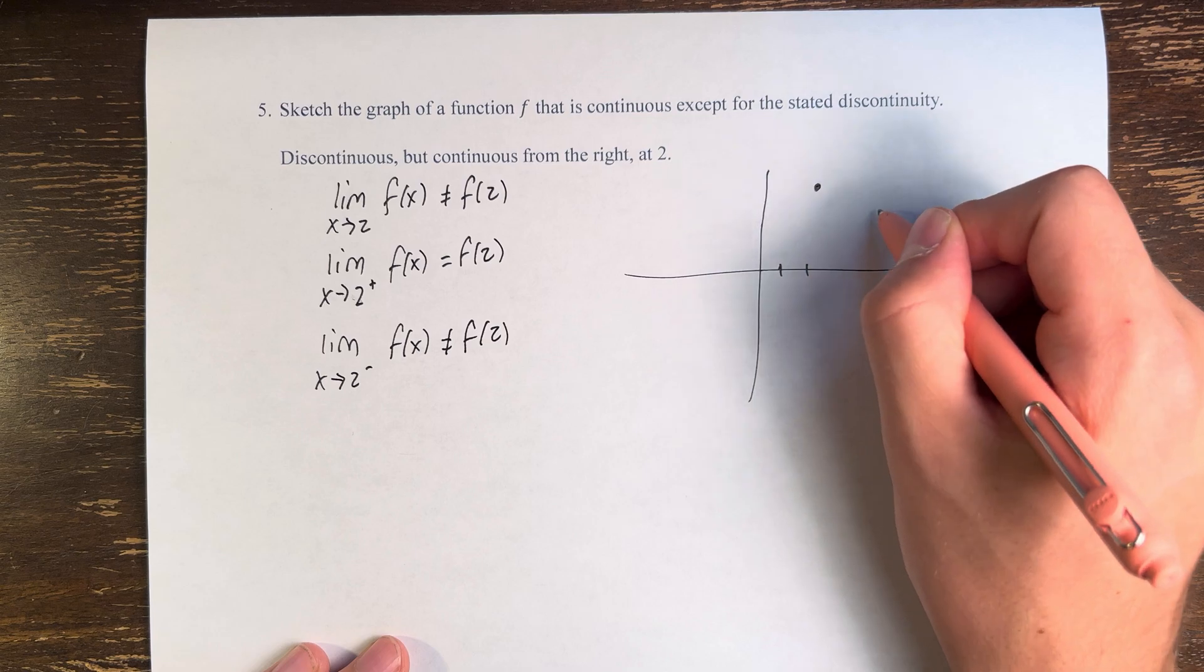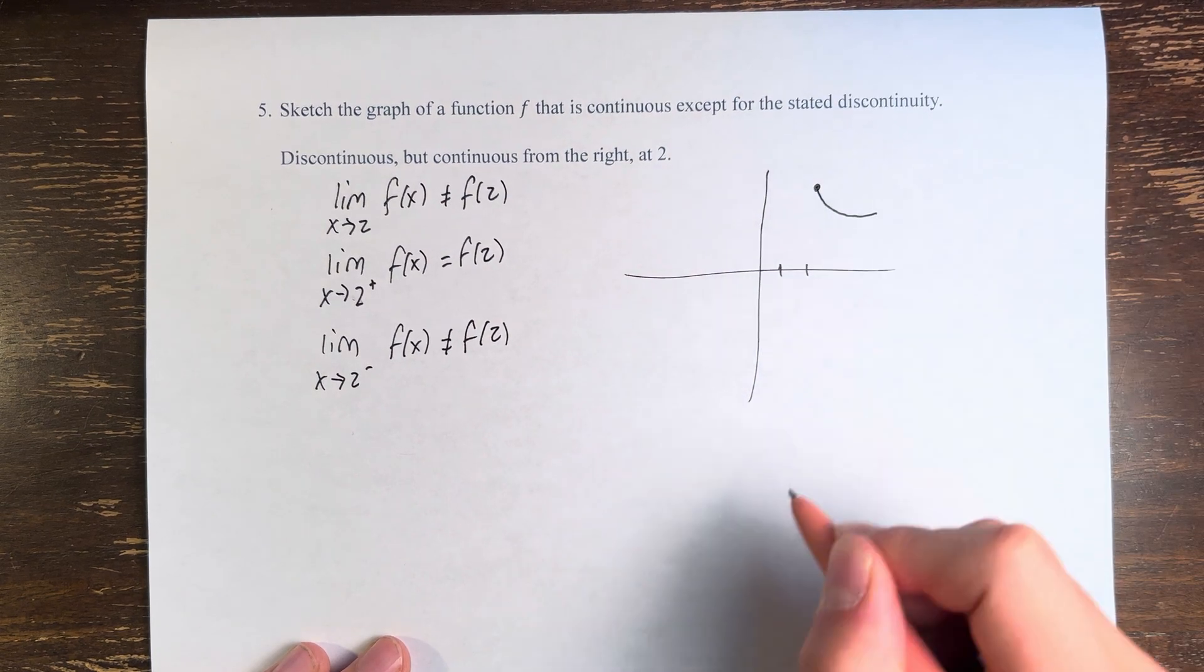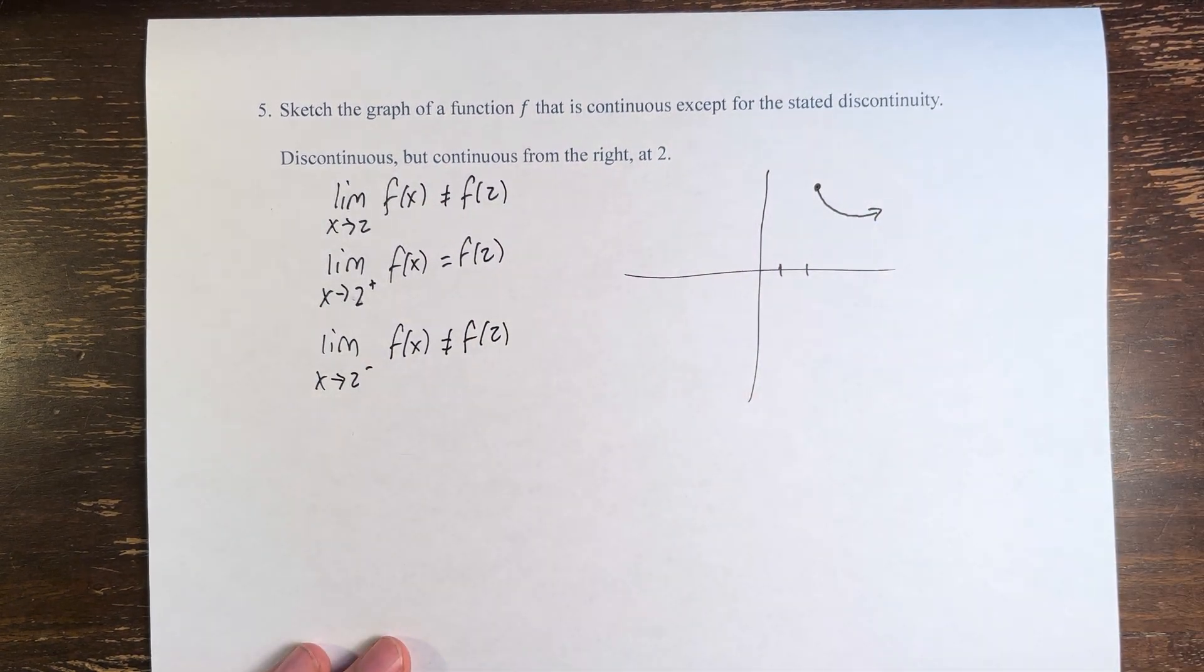We are continuous from the right, which means that as we approach from the right, we approach that point. And then it goes off to infinity in some other direction.